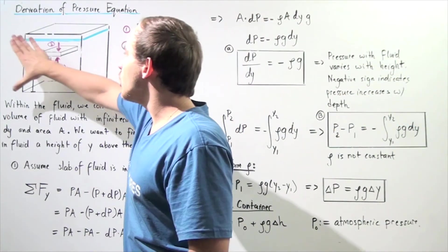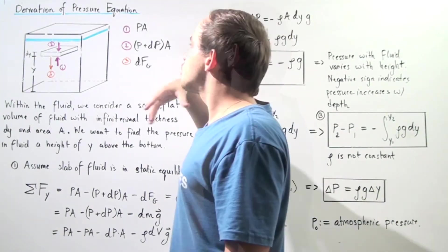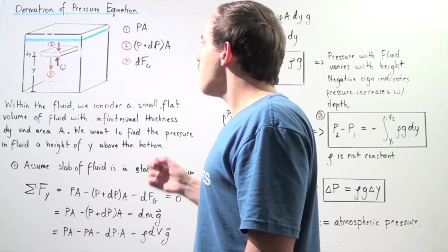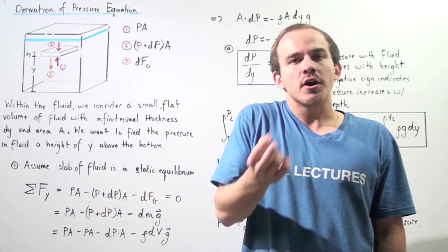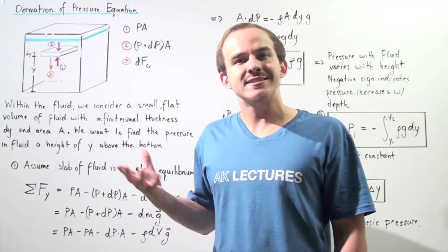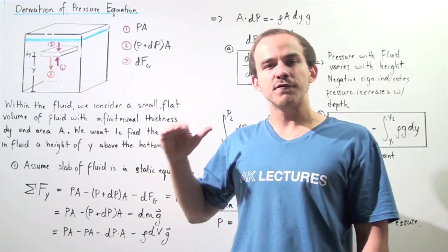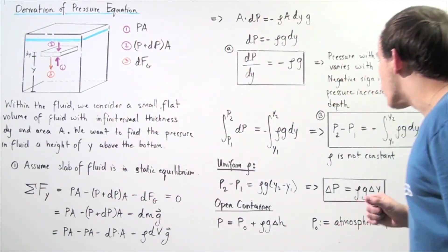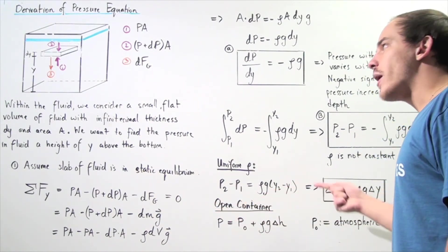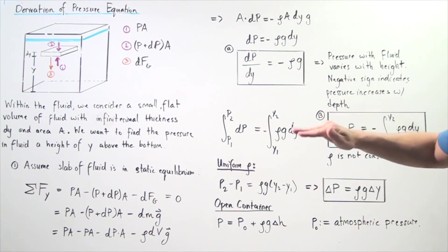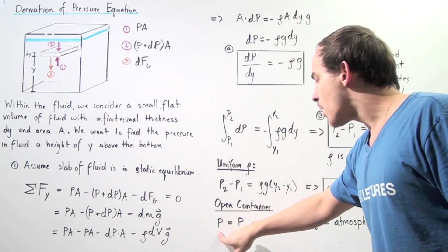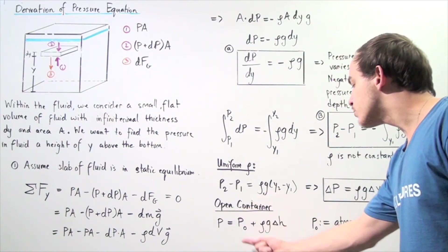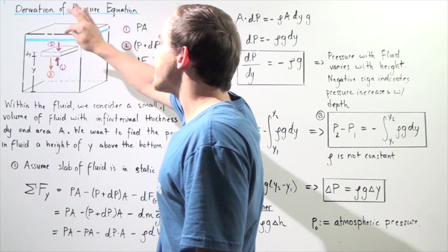Now suppose we open the top of the container so that the fluid inside is exposed to the atmosphere. The pressure at the surface of the fluid will no longer be zero — the atmosphere is itself a fluid, so the pressure at the surface equals the atmospheric pressure P0. From this equation we can derive that the pressure inside the fluid equals the atmospheric pressure P0 plus the pressure resulting from the fluid column found above the object inside the fluid.